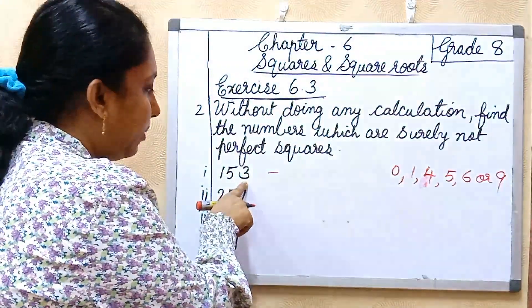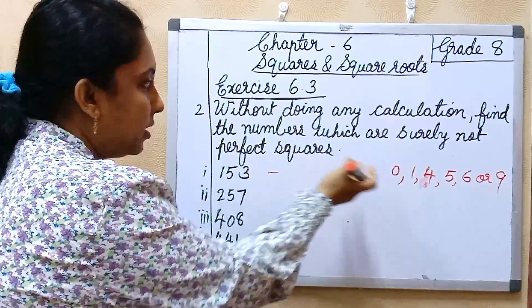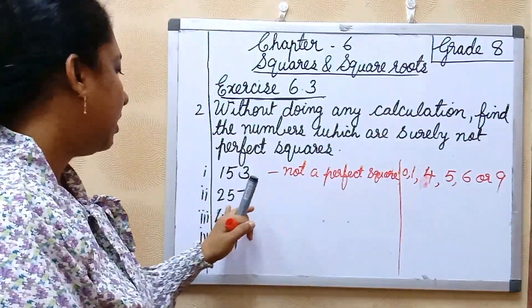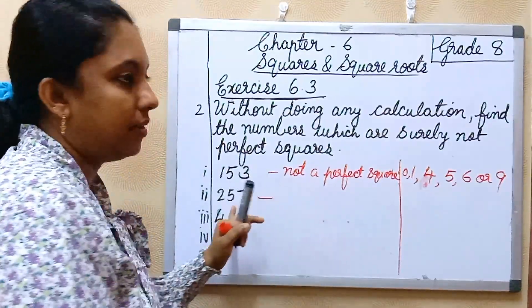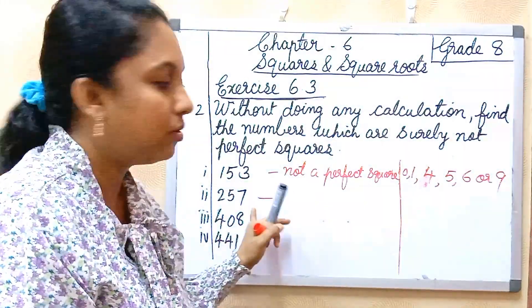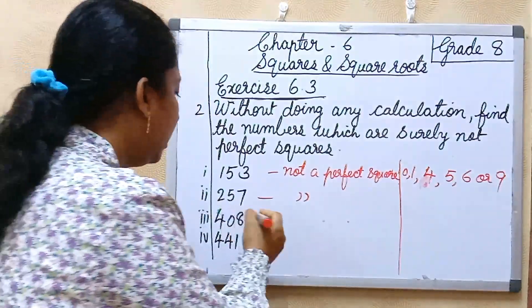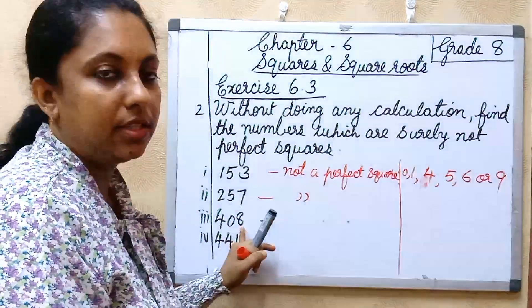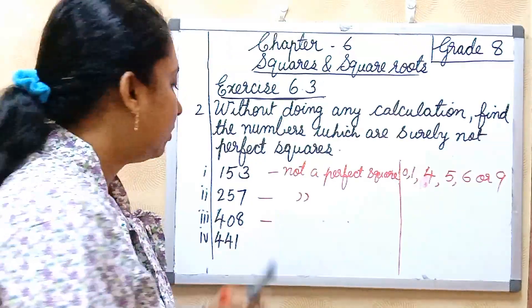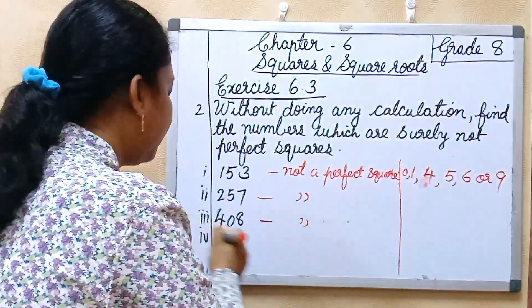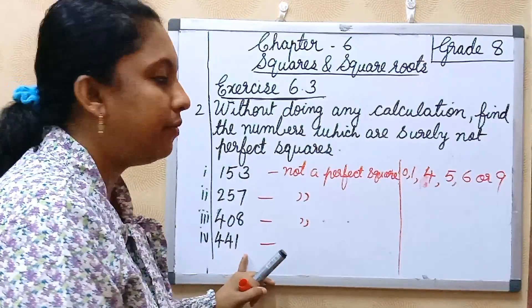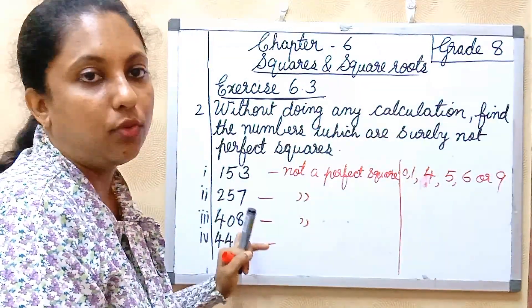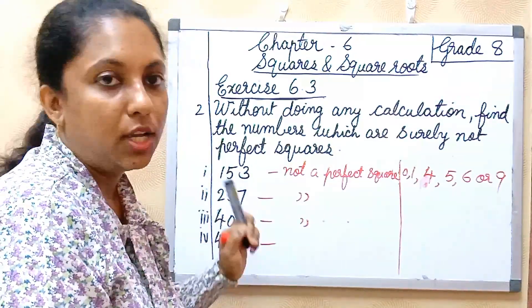We can check each number. Ones place, see here 3 only, obviously this is not a perfect square. Next one 257, ending digit is 7, so this is not a perfect square. Then next one is 408, ending digit is 8, so this is not a perfect square. Last one 441, ending digit is 1, so 441 is a perfect square.